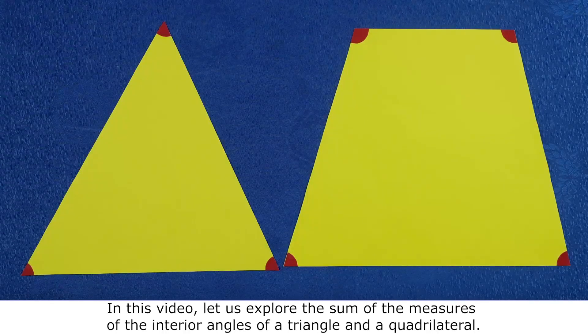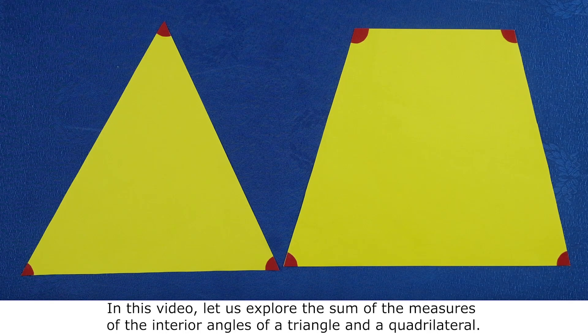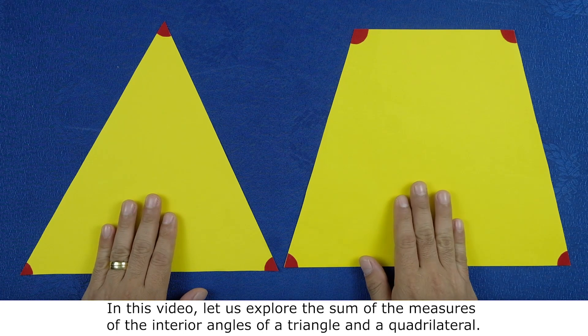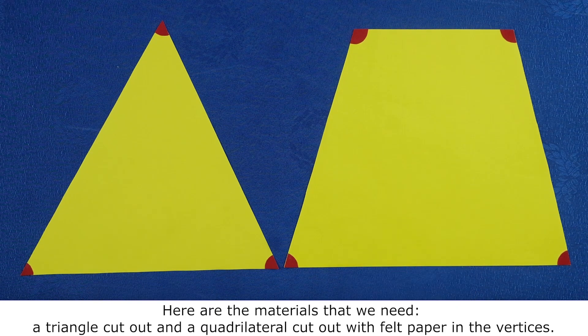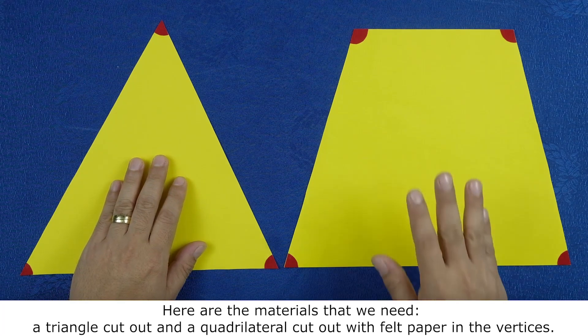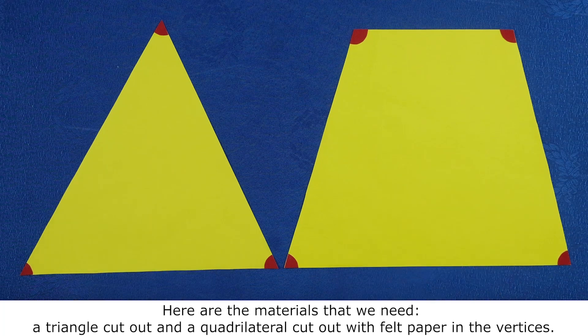In this video, let us explore the sum of the measures of the interior angles of a triangle and a quadrilateral. Here are our materials that we need: a triangle cutout and a quadrilateral cutout with felt paper on the vertices.